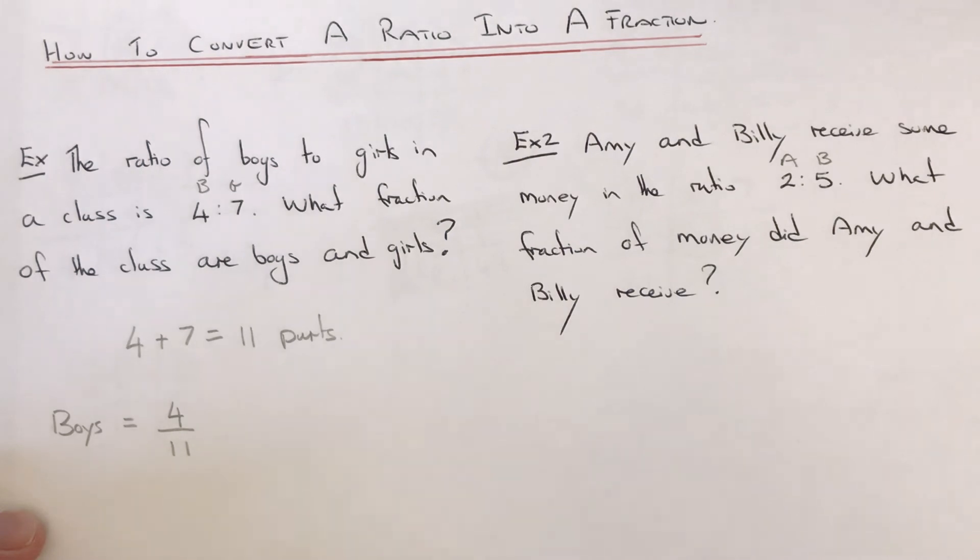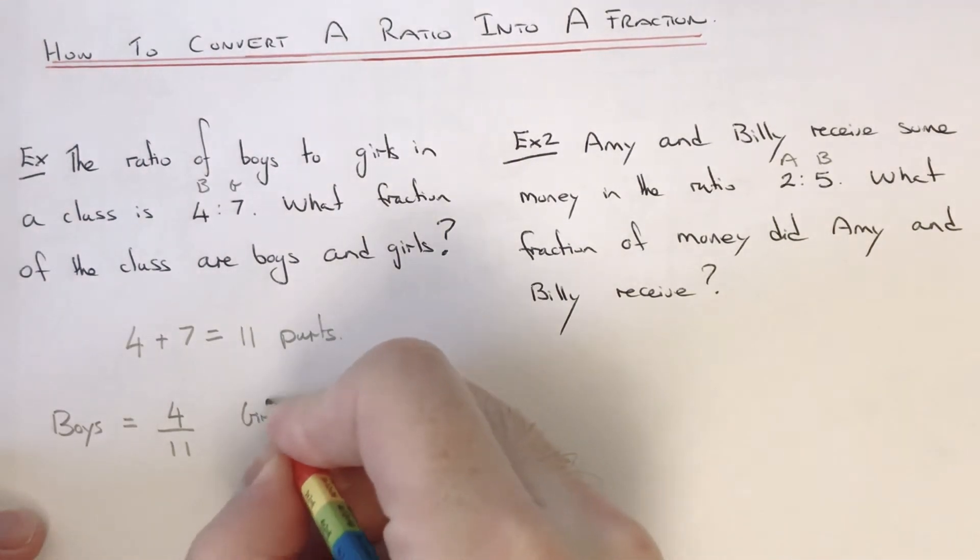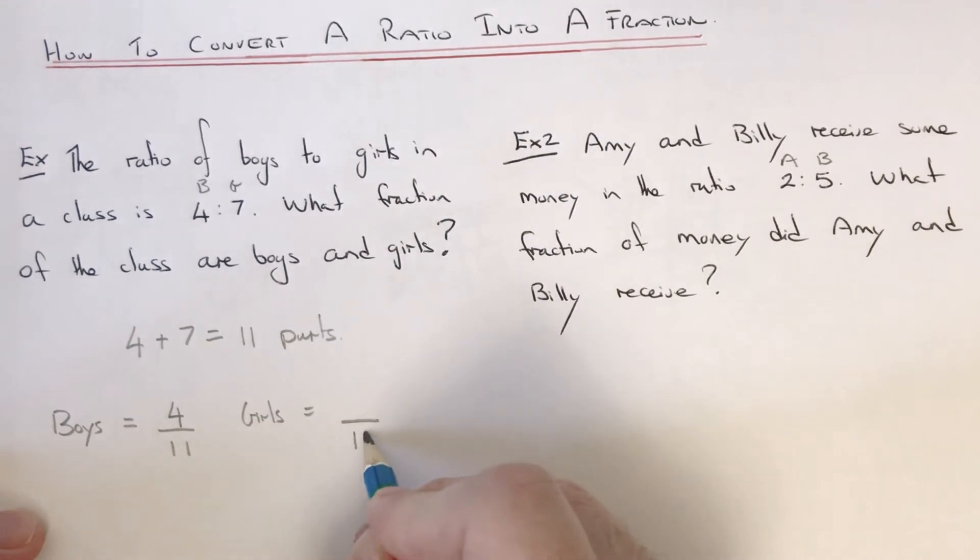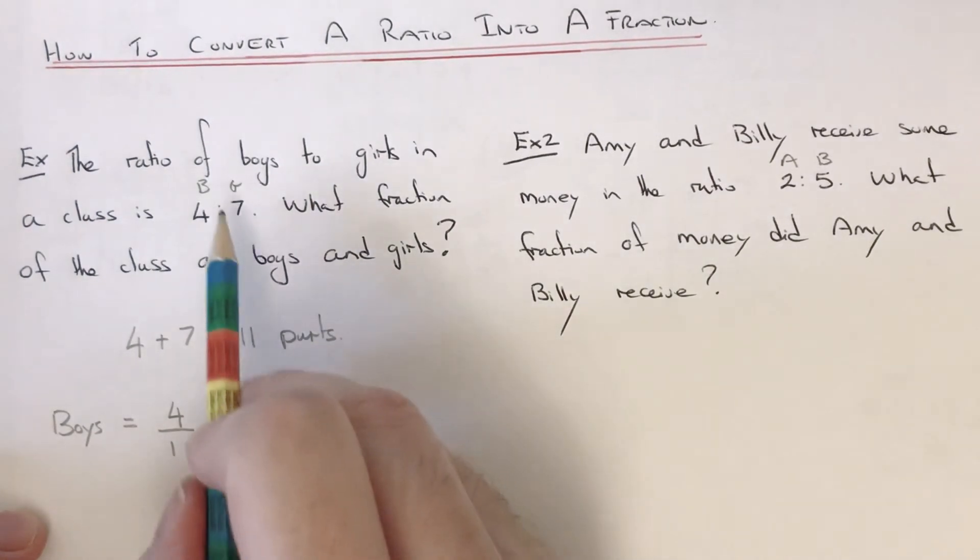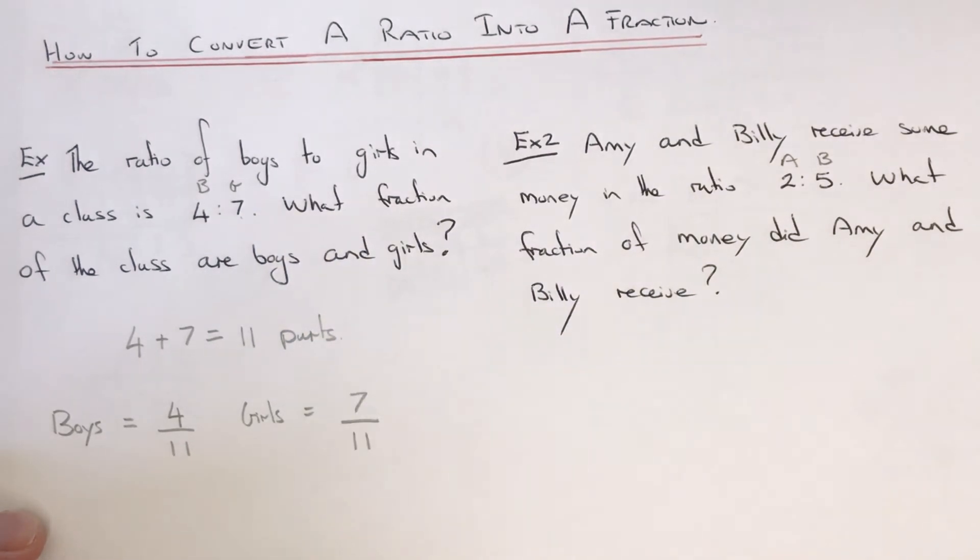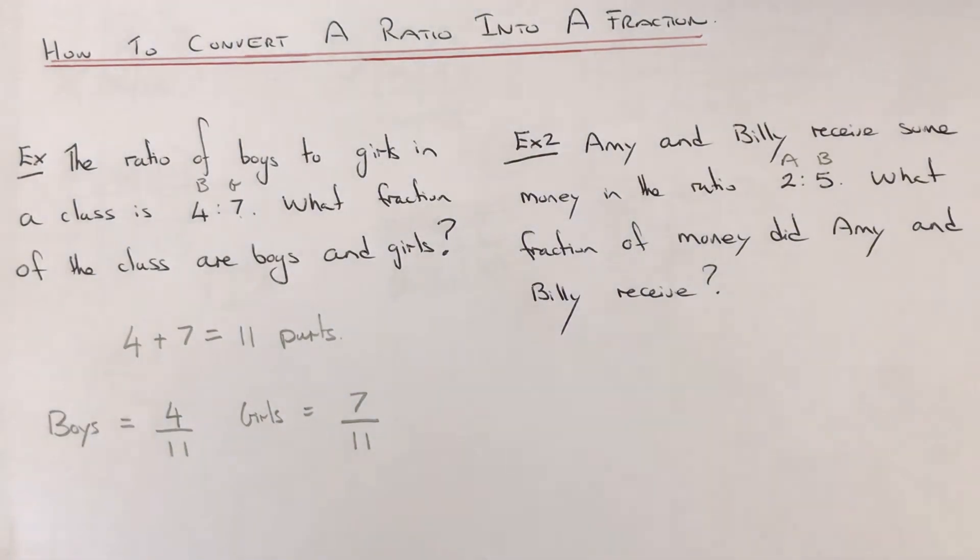For the girls then, again we put the total of parts on the denominator, and the girls amount this time is 7 parts. So we put that 7 on the numerator. So 7/11 of the class are girls.